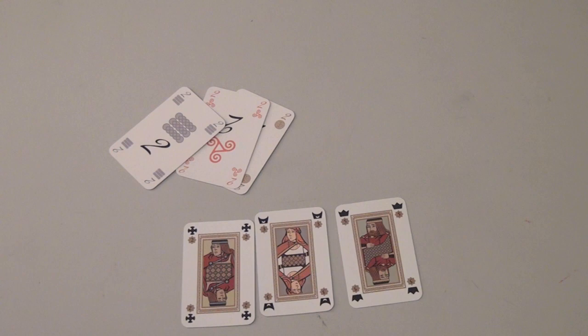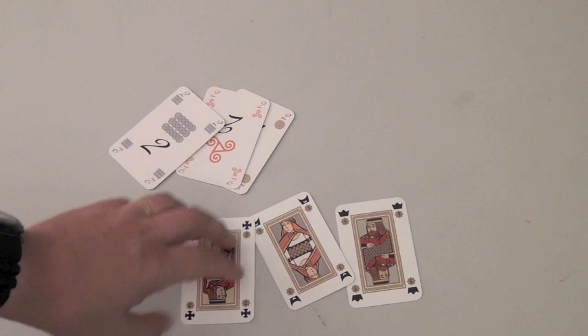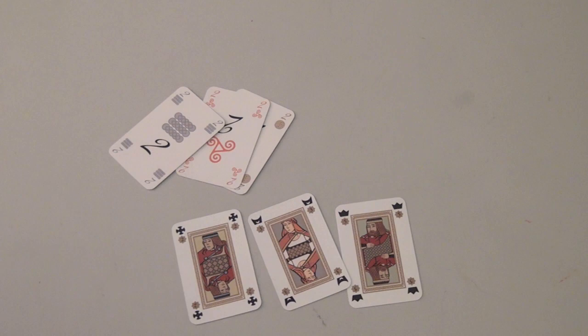You say, how are eight of a kind possible if there's only five suits? Well, because I can always take one of these and play it as a wild of a card that's lower than it. So for the jack, I can play it as a wild, anything all the way up to ten.